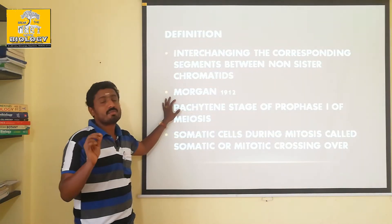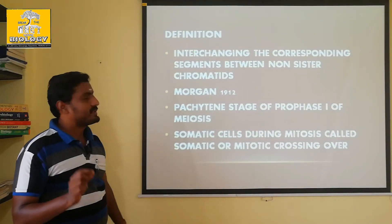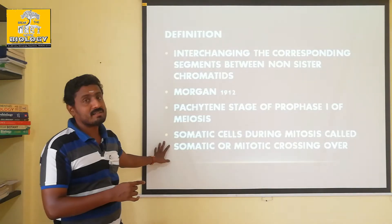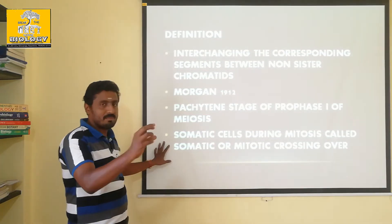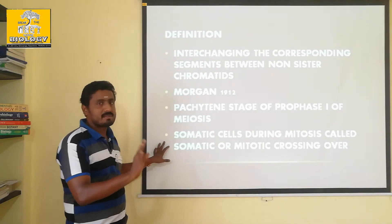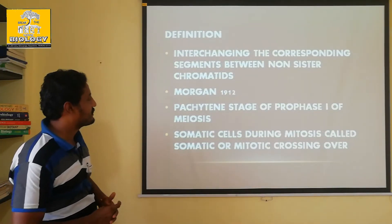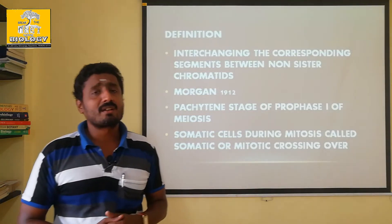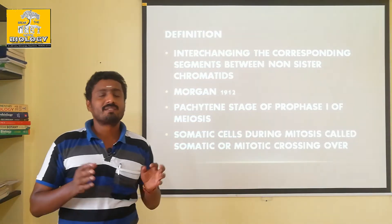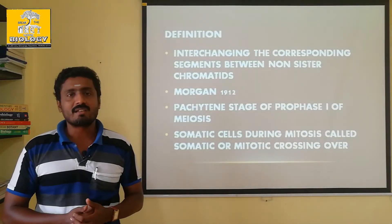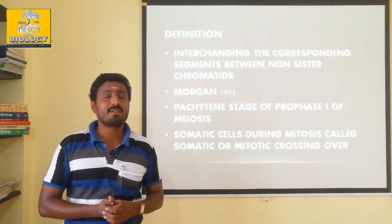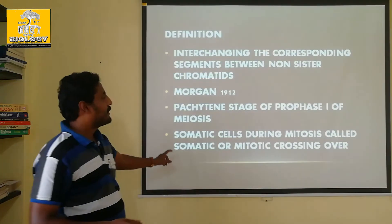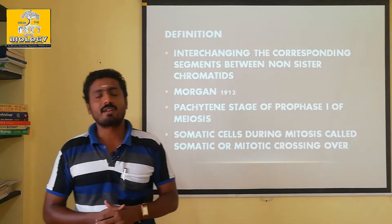T.H. Morgan, 1912, Drosophila melanogaster. The Pachytene stage of Prophase I bond. Next, somatic cells during mitosis — it is called as mitotic crossing over and somatic crossing over.